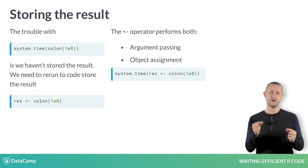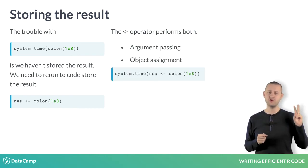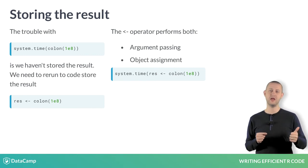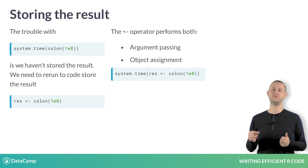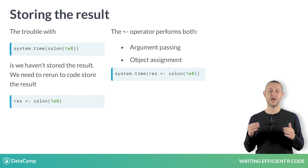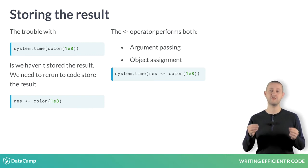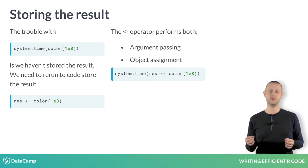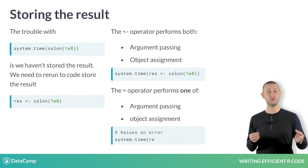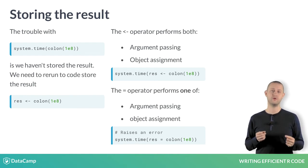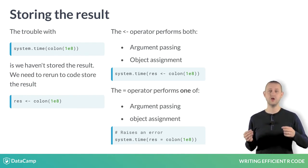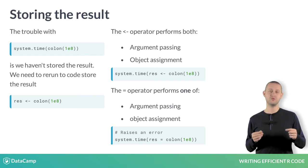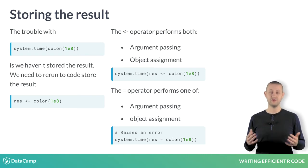Using the arrow operator within a function call performs two tasks: argument passing and object assignment. This allows us to both time and store the operation. The equals operator only performs argument passing or assignment, so using equals inside system.time will raise an error.